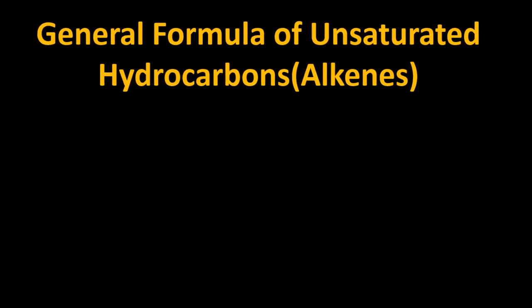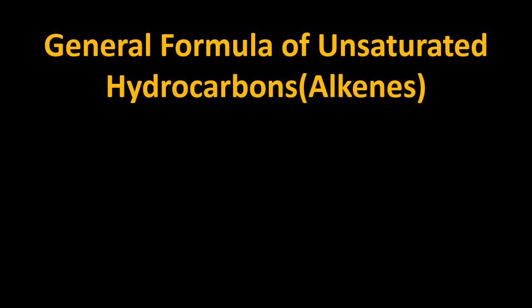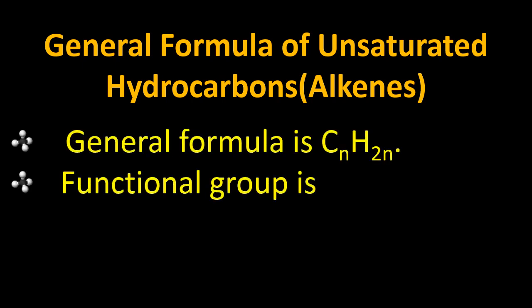The general formula for alkenes is CnH2n. The functional group is C=C (carbon double bond carbon), which is considered a functional group because it can change the properties of the hydrocarbon chains in which it is present.